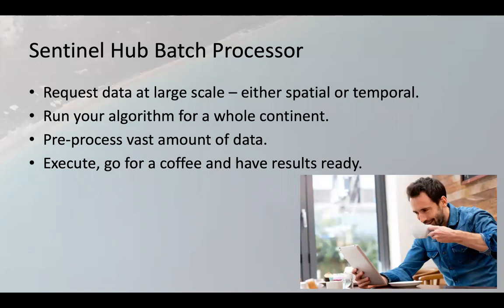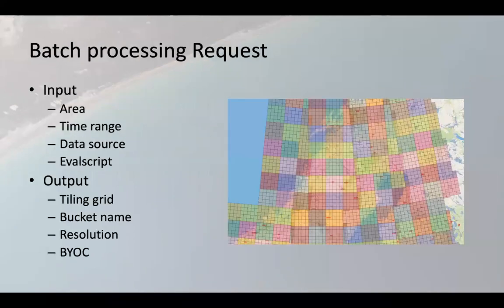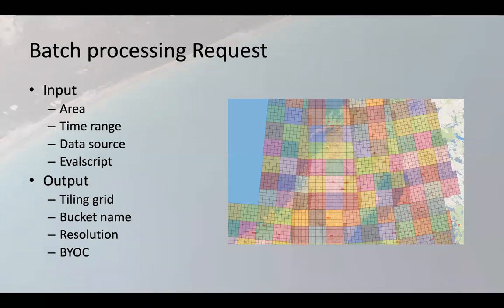You basically define the script on how to process the data, define the area of interest which can be a whole continent or even the whole world, and then you just set it running. You will get results nicely chunked in a grid. As soon as a tile is created, you get it on the object storage on your own bucket and can immediately use it further for processing. So you can create a global scale classification, put it to object storage, immediately run the classification, then delete it so you don't store data that would cost you unnecessarily. You can also register results back into Sentinel Hub using the Bring Your Own COG feature so that you can visualize it further or use it through the API.